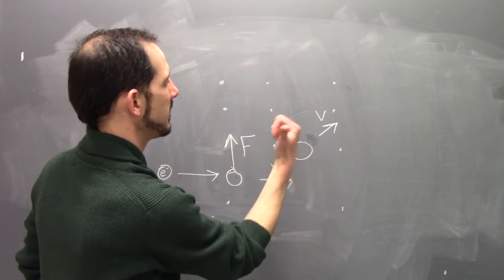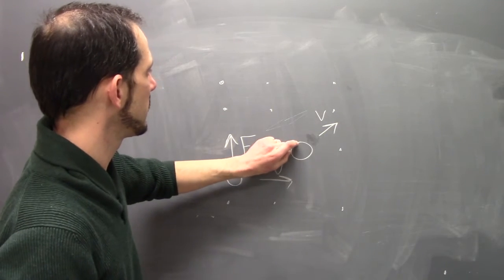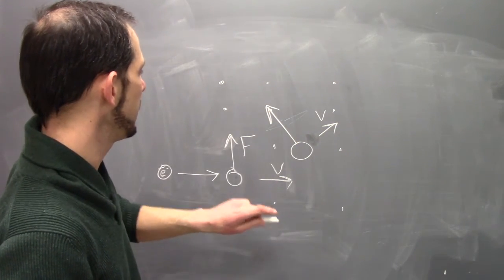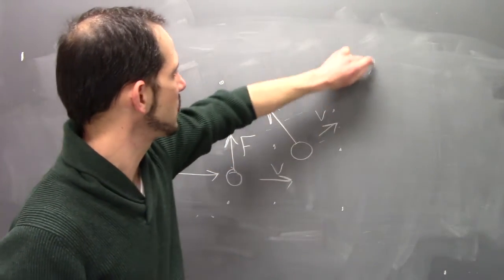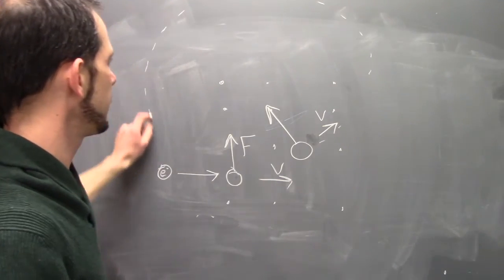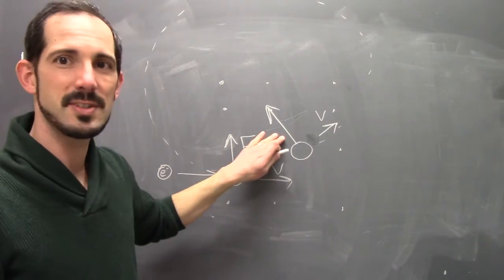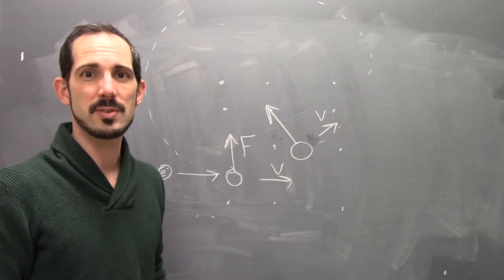So the velocity goes this way, magnetic field is out, so the force is now going to be pointing this way. And that's going to cause this charge to circulate. This force is acting as our centripetal force in this case.